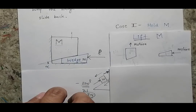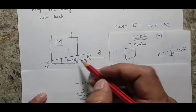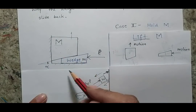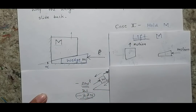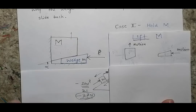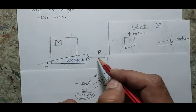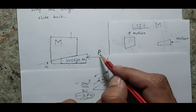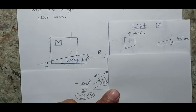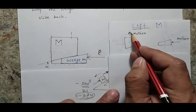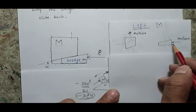We are talking about the case where I want to lift the body, so if P increases by a very small amount, the body will lift. That means if the equilibrium breaks, the body will go in the upward direction and the wedge will go in the leftward direction. Once we understand the direction of motion if equilibrium breaks, we can define the direction of friction based on that.